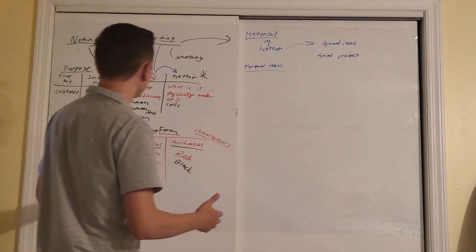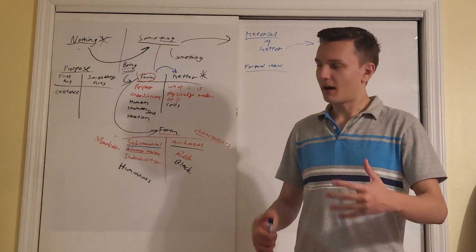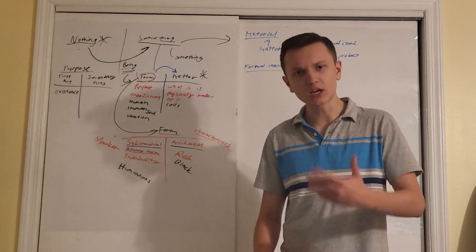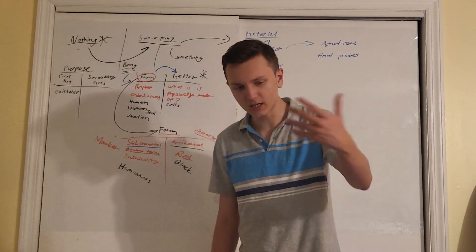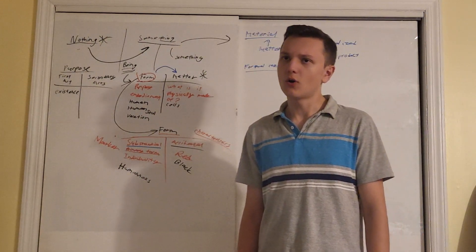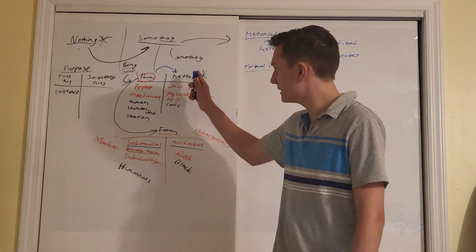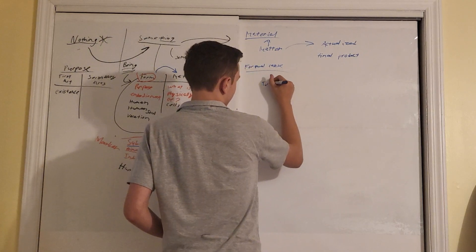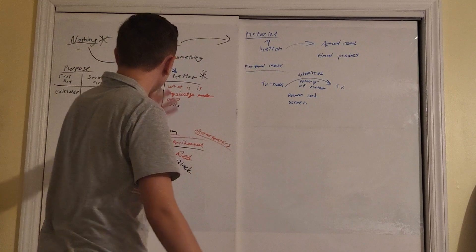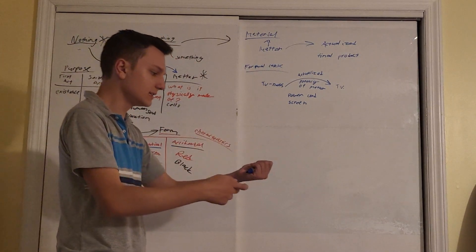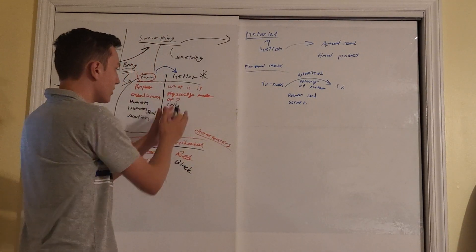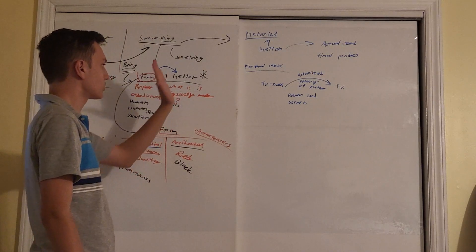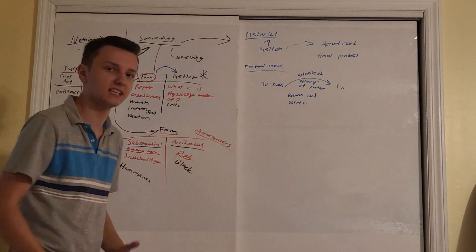Form goes into formal cause. The formal cause has to deal with the form, as you might expect. Given my screen, my plastic, my power cord, I might as well make a monitor, like a computer monitor. An engineer can make a computer monitor with those components. So you need to actualize the potency of the matter with the correct form. You need to actualize it with, I guess, TV-ness. This is pretty basic, tying into what we've been talking about. In order to cause a TV to exist, you need to have a matter with the potential to create a TV, and you need to have a form that will actualize the potential of the matter in order to give it the purpose of a TV, the effectiveness of a TV.